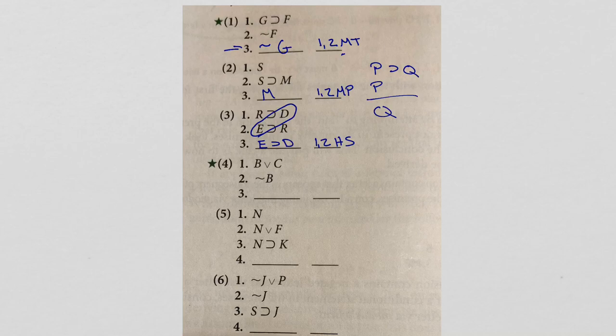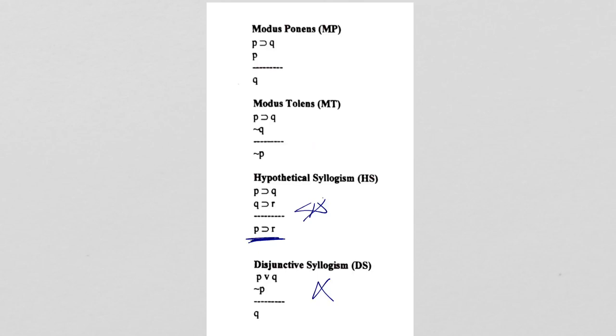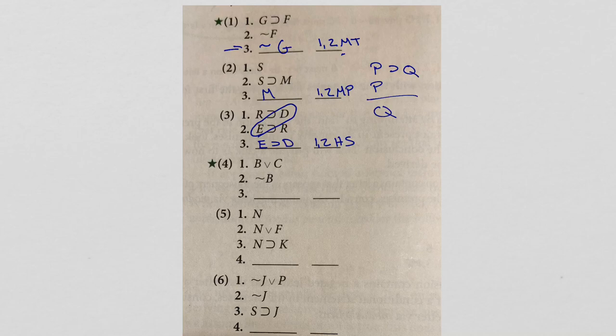Okay, now the fourth one, it has a wedge in it. So I'm going to have to guess that we're down here, and we're going to have to use this one right here. So disjunctive syllogism is P or Q, then you're given not P, so then you're given Q. Okay, let's see how we can apply this. So we have B or C, then we're given not B. So we know that B is false, so C has to be true. So we'll use one and two DS.